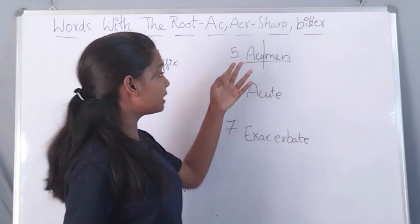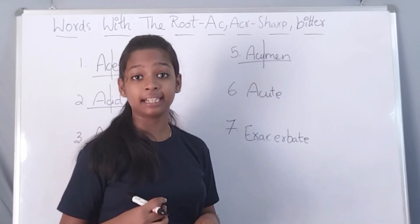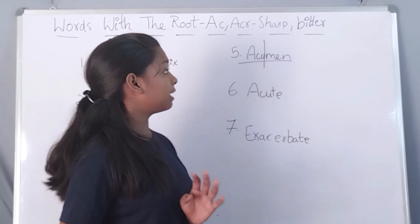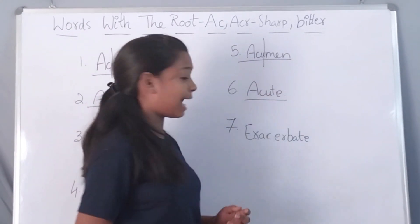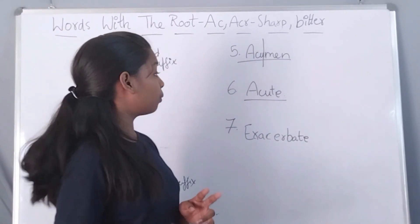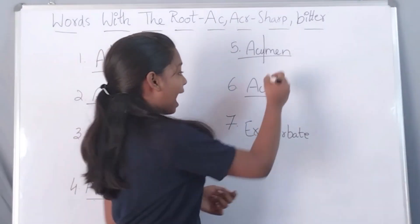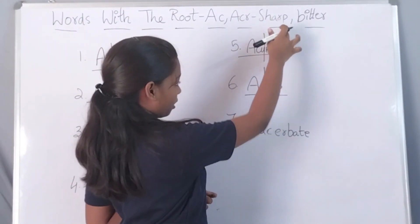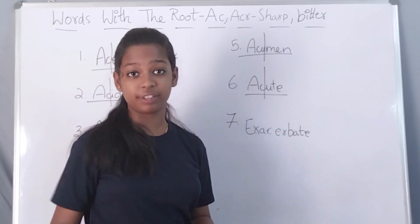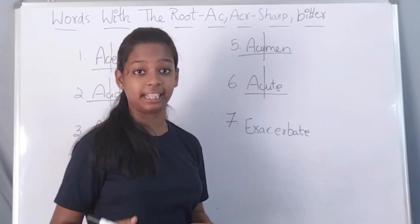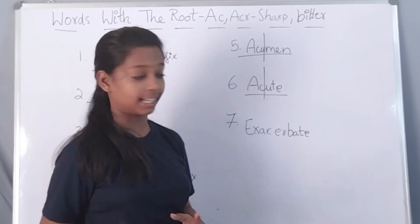The next word is acute. Acute has one root word in it, ACK, which means sharp or bitter. The word acute means very severe or serious.